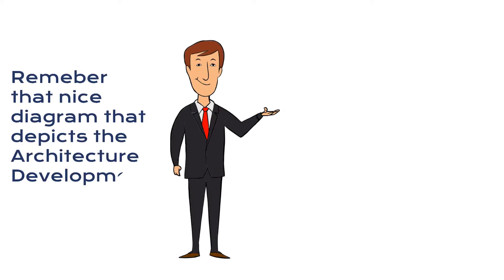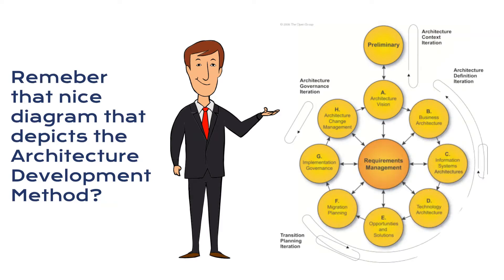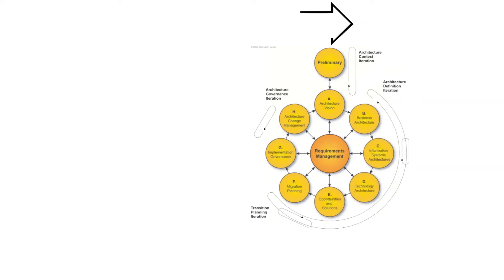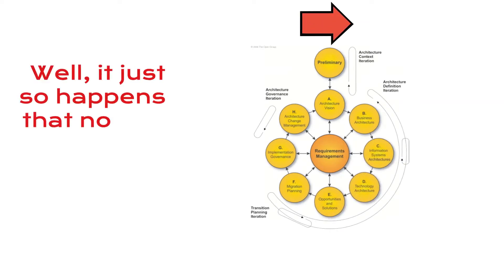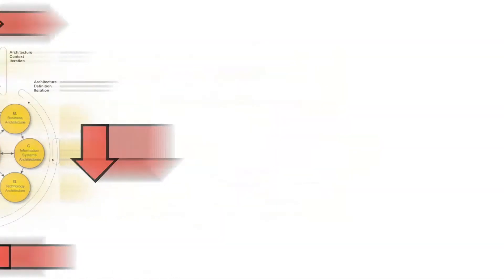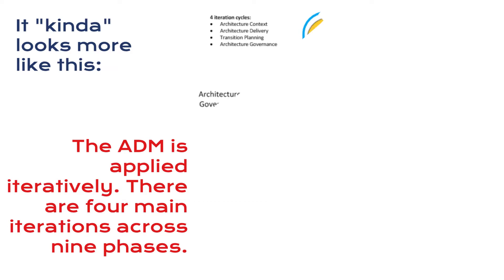Remember that nice diagram that depicts the architecture development method? Well, this is what it looks like, but it just so happens that no one ever goes through that cycle in a single swoop. It kind of looks more like this. The ADM is applied iteratively. There are four main iterations across nine phases.